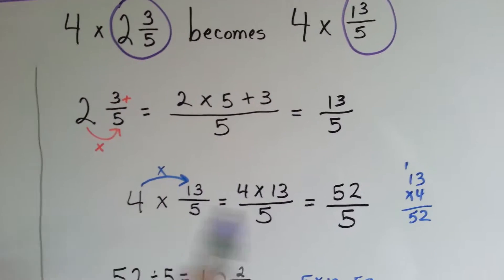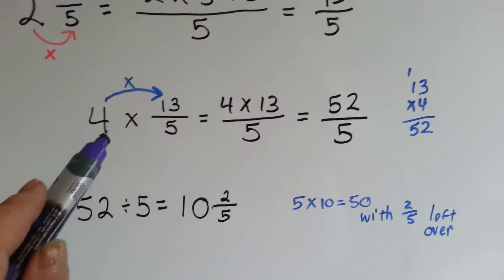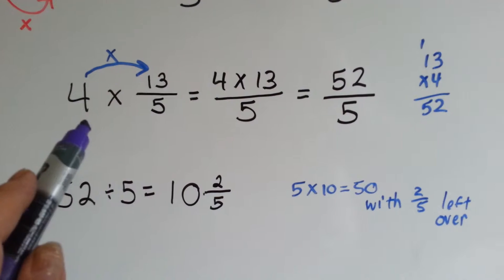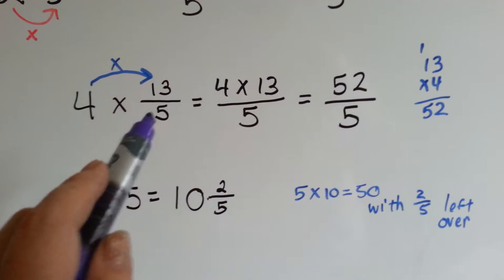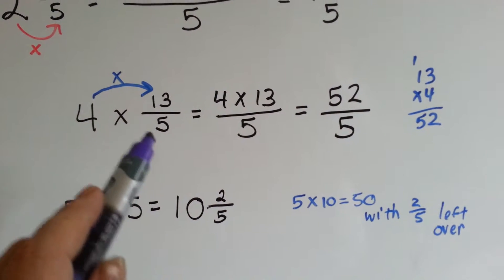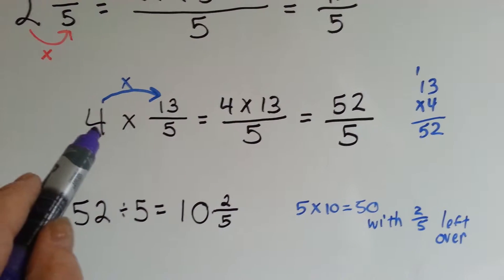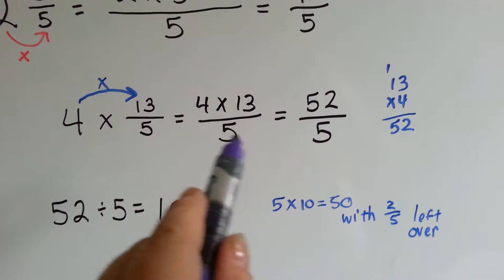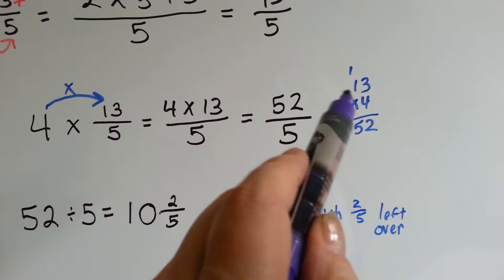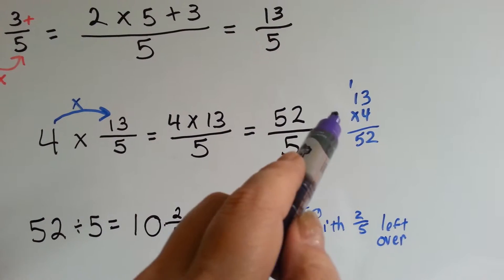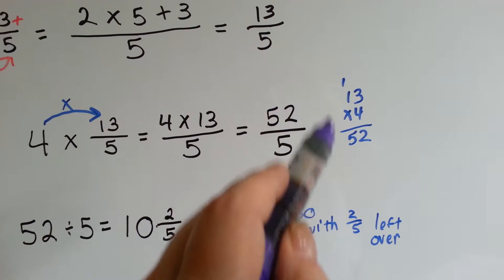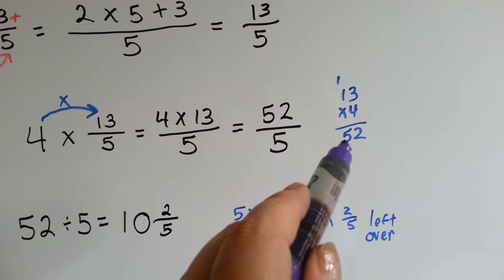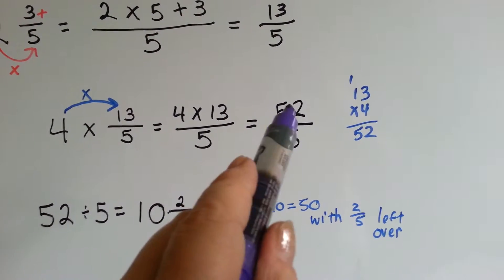Now we plug it in and solve: 4 times 13 fifths. We're finding 13 fifths four times — 13 fifths plus 13 fifths plus 13 fifths plus 13 fifths. We multiply 4 times 13 and put it over 5. 4 times 3 is 12, carry the 1; 4 times 1 is 4, plus the carryover is 5. So 13 times 4 is 52, giving us 52 fifths.